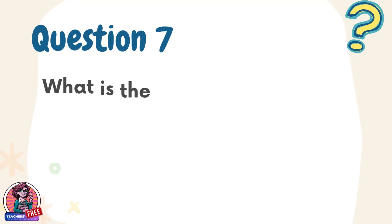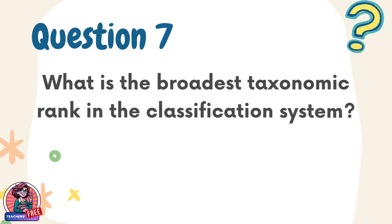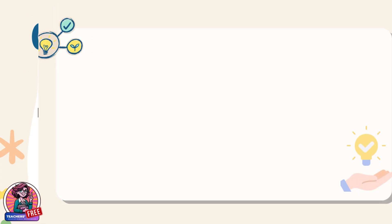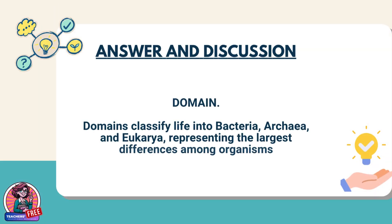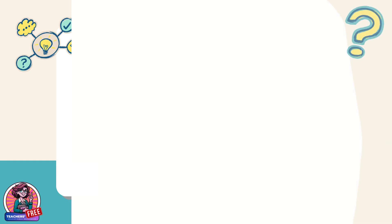Question 7. What is the broadest taxonomic rank in the classification system? Answer: Domain. Domains classify life into bacteria, archaea, and eukarya, representing the largest differences among organisms.